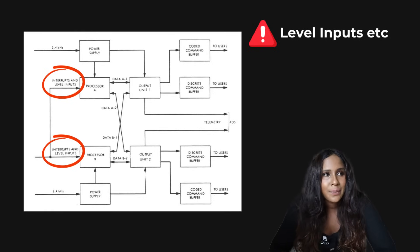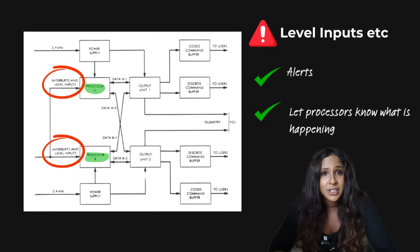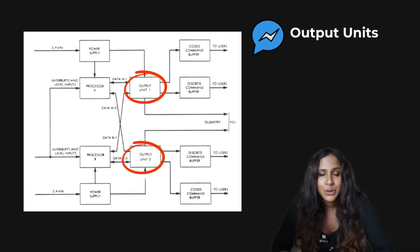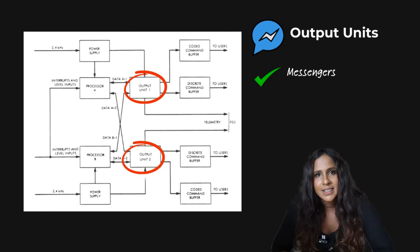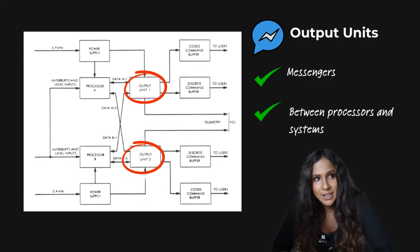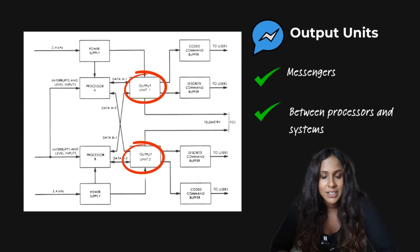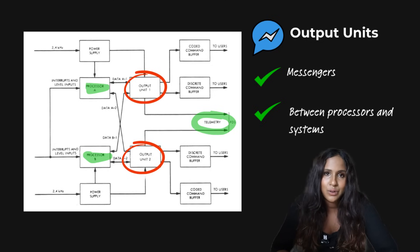You also see this interrupts and level inputs. These are like alerts or notifications that are sent to the processors. They let the processors know when something needs immediate action, such as some sort of critical event or system change. You also get the output units, unit one and unit two. And these units act as messengers between the processors and the spacecraft systems. They take the decisions made by the processors, aka the brains, and they send them to the right places, like controlling instruments or antenna.